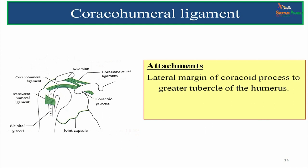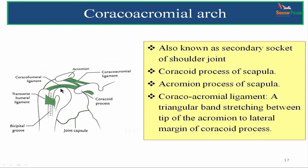The coracohumeral ligament is attached from the lateral margin of the coracoid process to the greater tubercle of the humerus. The coracoacromial arch is a secondary socket for the shoulder joint, made up of three components: two bony components — the coracoid process of the scapula and the acromial process of the scapula — and one ligamentous component, the coracoacromial ligament, which is a triangular band stretching between the tip of the acromial process to the lateral margin of the coracoid process.